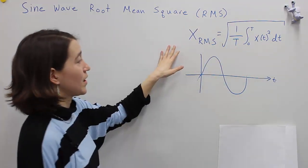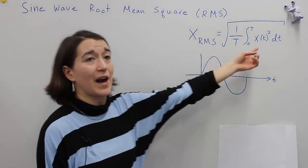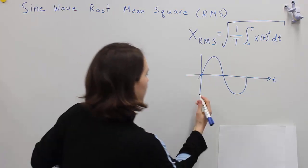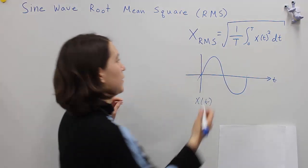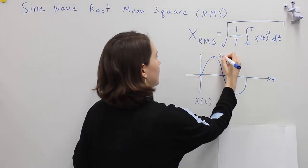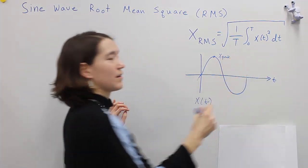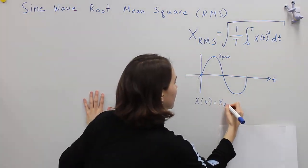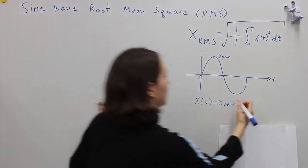This is the basic equation. If we're working with a basic sine wave, we first need to define x — so what is x? In this case we're going to do x of t. We need to define the peak value here, so we're going to call this xpeak, just to make it very clear that this is the peak value.